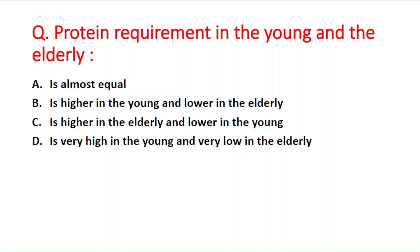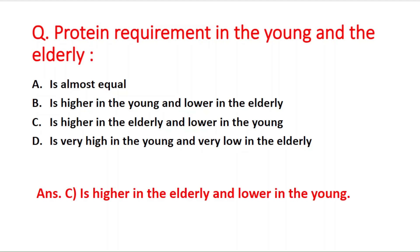Next question: protein requirement in the young and the elderly is — option A almost equal; B higher in the young and lower in the elderly; C higher in the elderly and lower in the young; D very rich in the young and very low in the elderly. The right answer is option C — protein requirement is higher in the elderly and lower in the young.